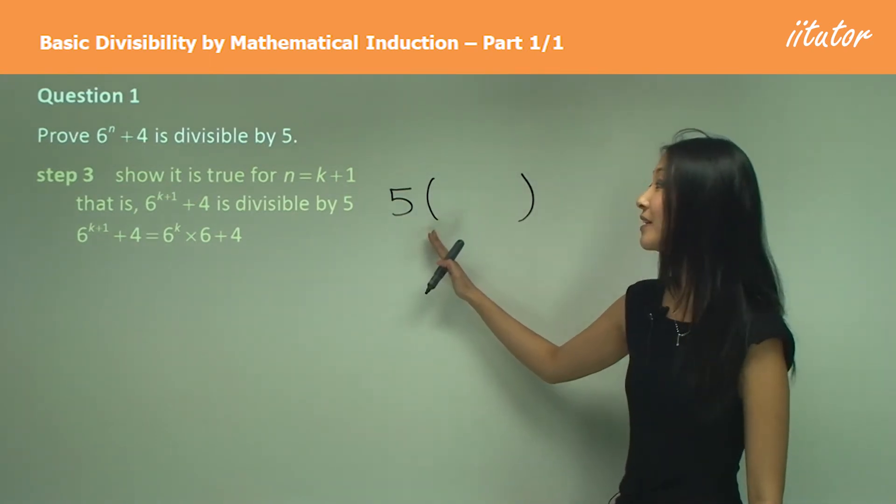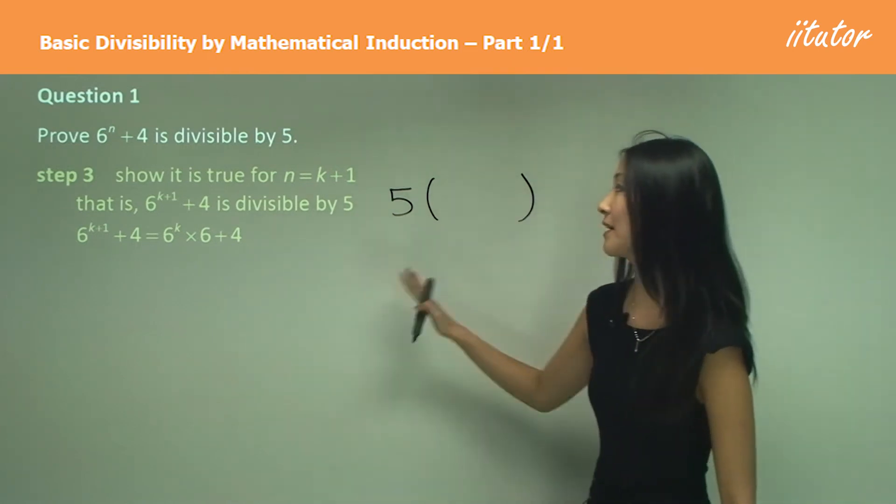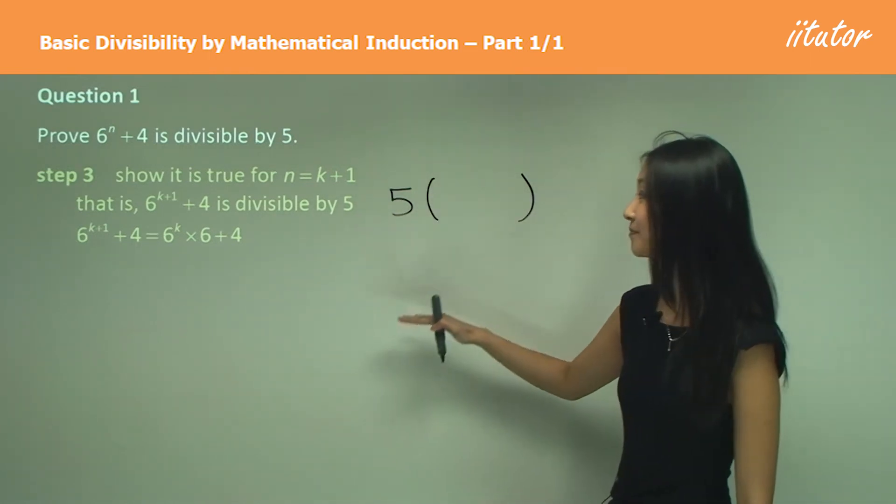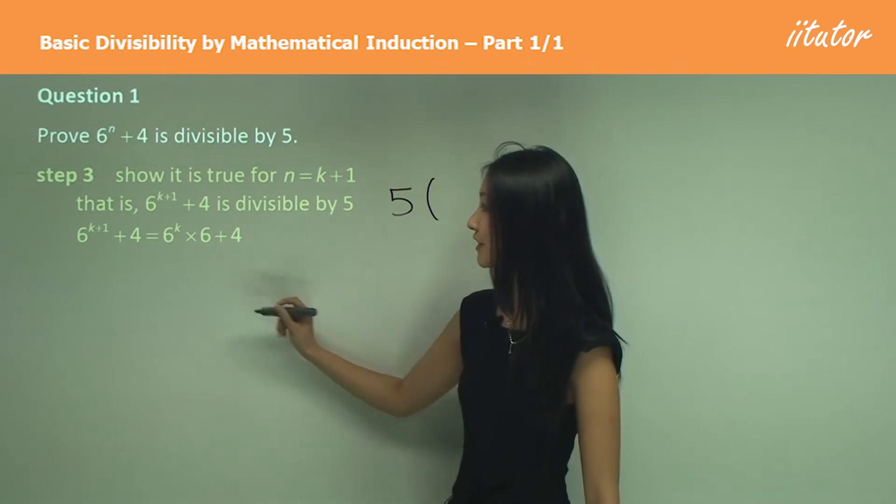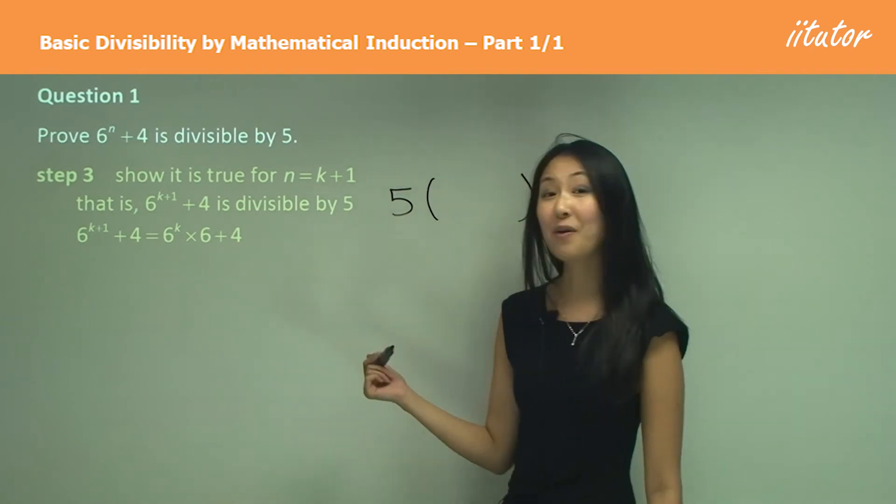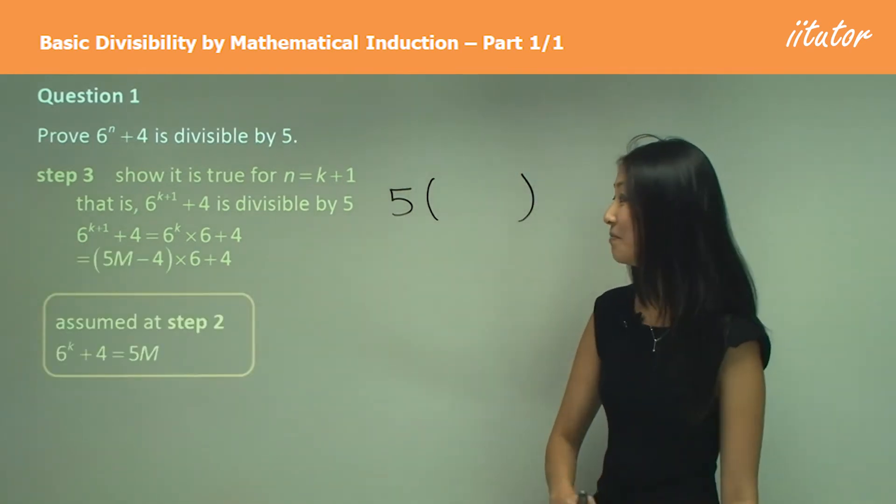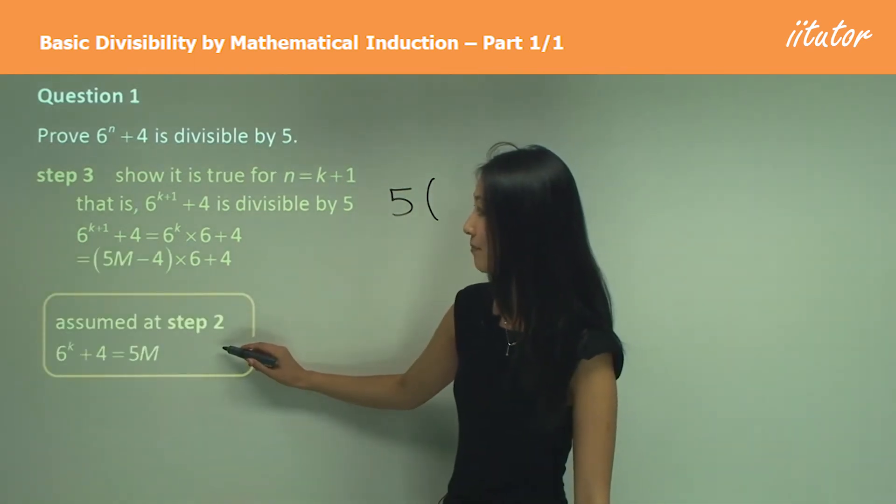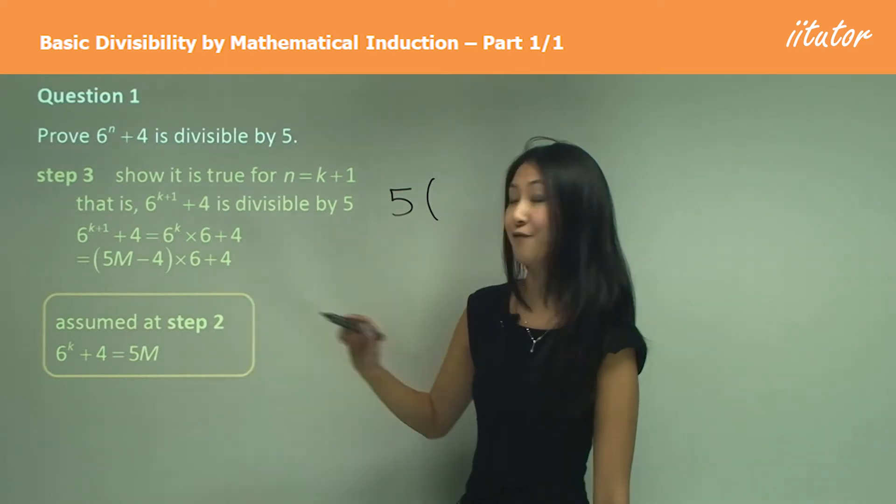That's the best way to show it. So we want to manipulate it so we can factorize 5 out. So first thing we want to do is separate this into 6 to the power of k times 6 plus 4, and why I want to do that is so we can use the assumption that 6^k plus 4 equals 5m.